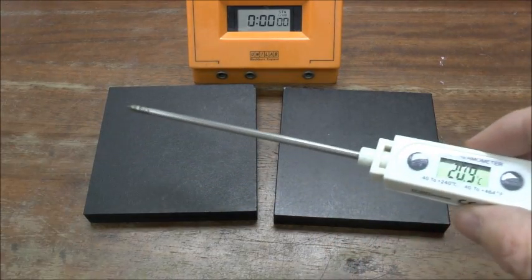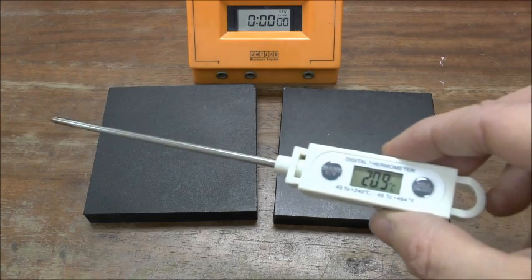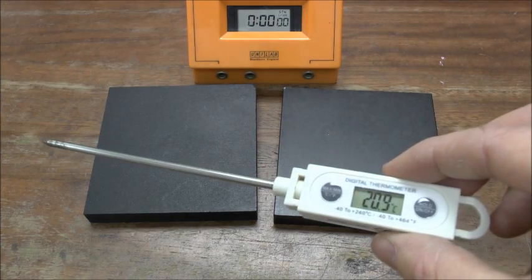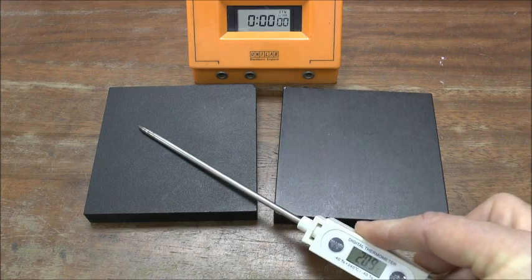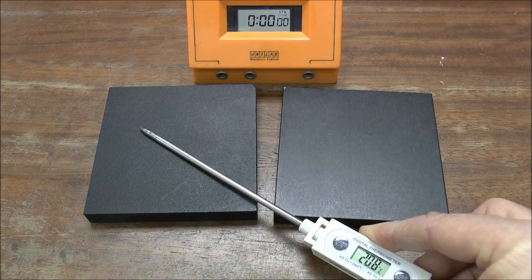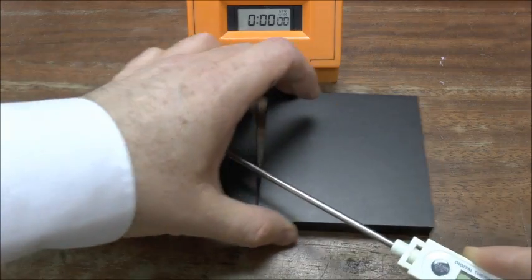This is a bit of fun with an insulator and a conductor. So the room temperature is just below 21. If I try and get the temperature off the surfaces, that's about 20.8.